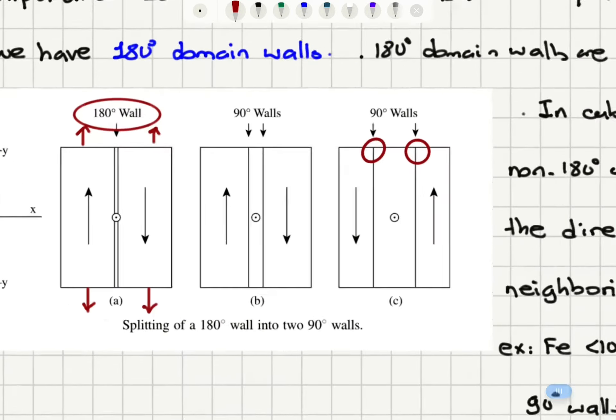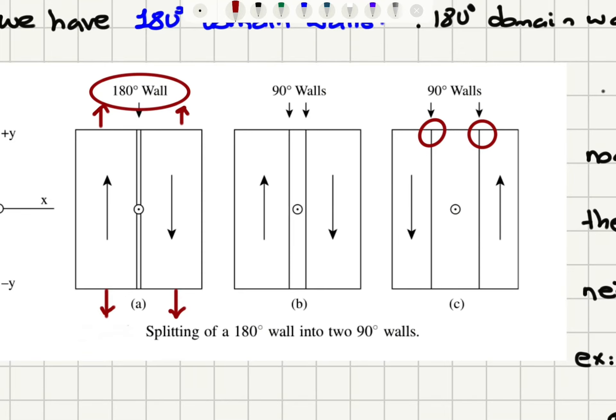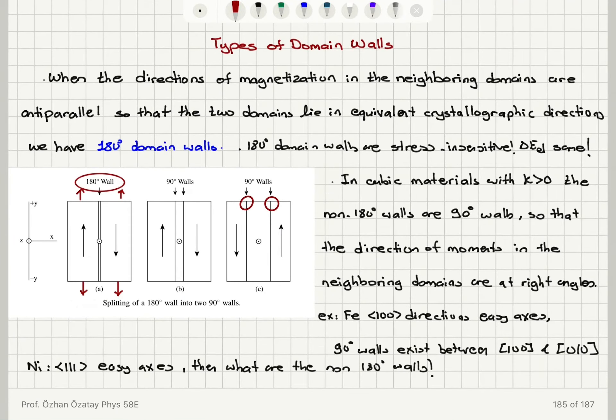When we have the directions of magnetization pointing anti-parallel to each other in two neighboring domains, the domain wall in between is a 180 degree domain wall. This will happen in the case of uniaxial anisotropy.